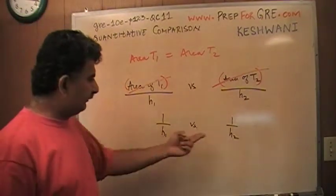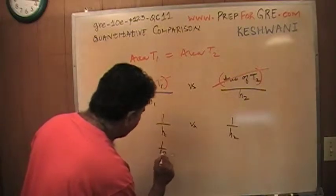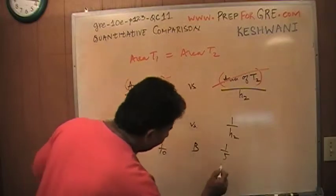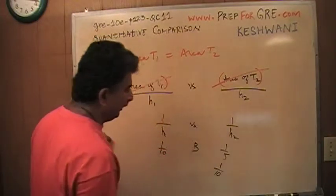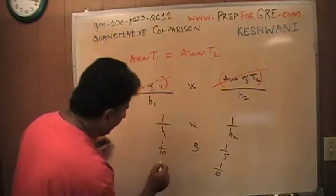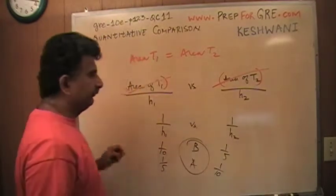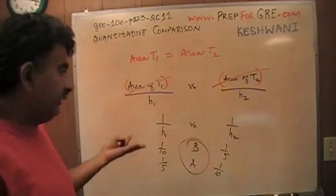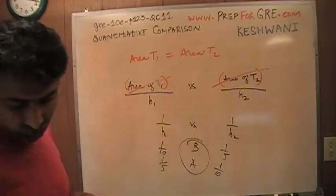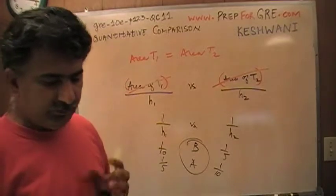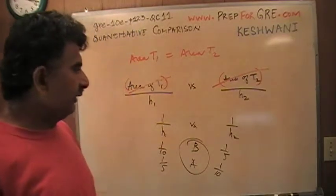If this is 10 and this is 5, you're dealing with 1 over 10 versus 1 over 5, in which case the answer is B. Or if the height of the second triangle is 10 and the height of the first triangle is 5, then the answer is A. It keeps changing. You can't tell. Or maybe they're equal. Who knows? Well, they can't be equal because we're told they have different heights, H1 and H2. So C is ruled out. But we can't really tell which one is bigger.